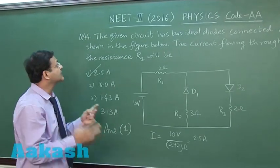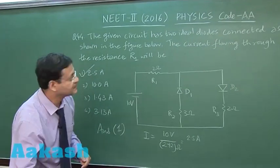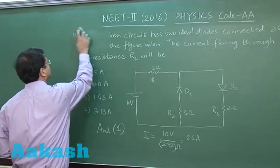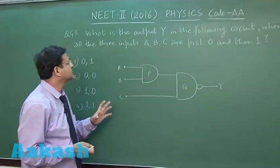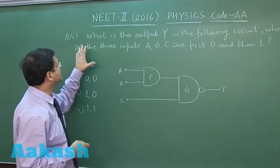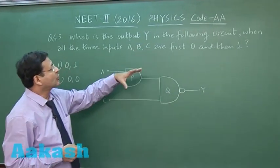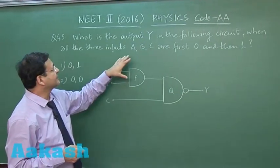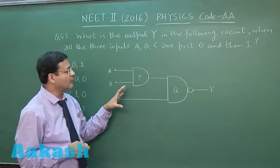Now let us switch over to the last question that is question 45 for this paper. Now this question 45 is based on logic gates. Here it is asking what is the output y, output y here. In the following circuit when all the 3 inputs a, b, c are first 0 and then 1.